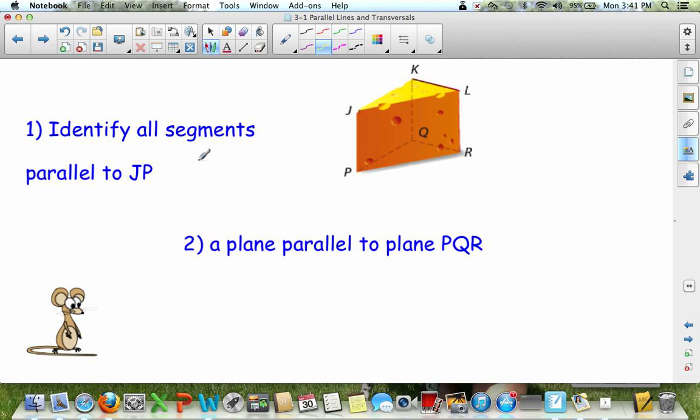Okay, all the lines parallel to JP. You should have said, if this is JP right here, all the lines not intersecting JP is LR. And I probably don't want yellow, do I? So we could say LR and KQ. This one back here.